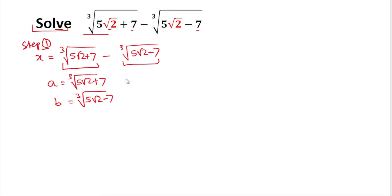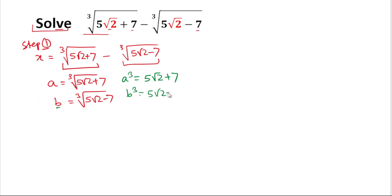For eliminating the cube root value, we'll cube both sides. So a³ = 5√2 + 7, and likewise b³ = 5√2 − 7, since the cube root is cancelled when we cube both sides. Hopefully everything is clear up to here.